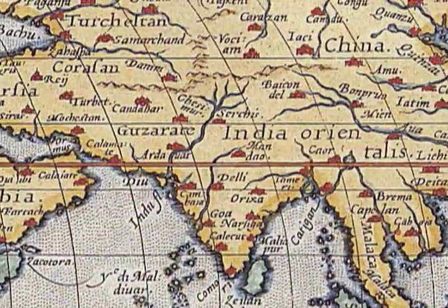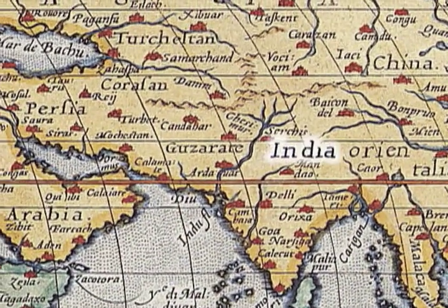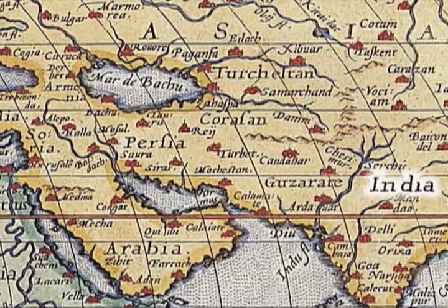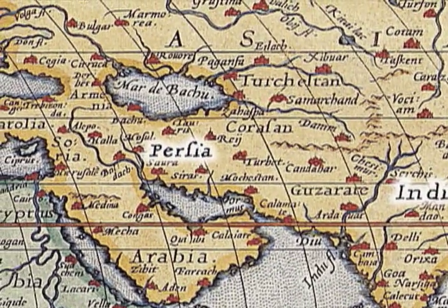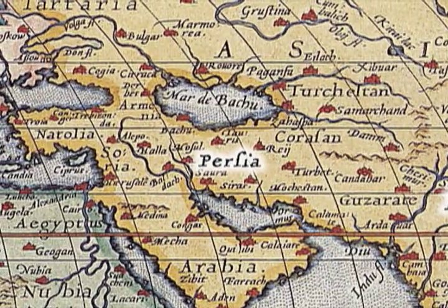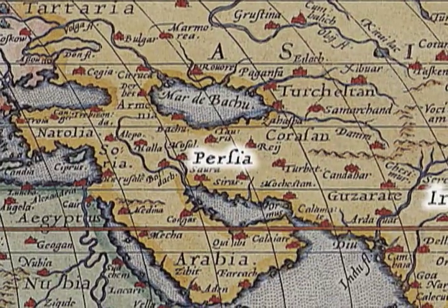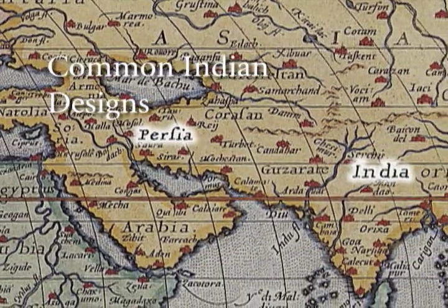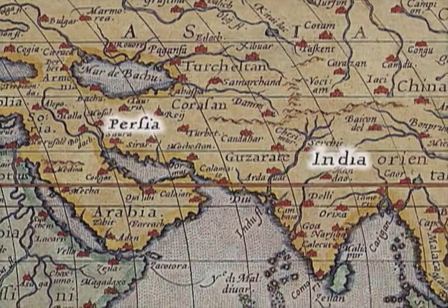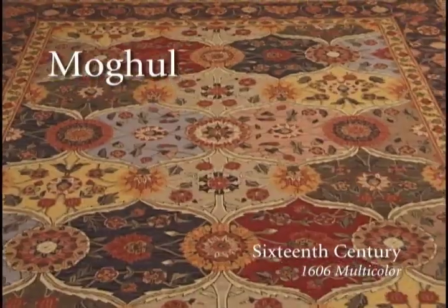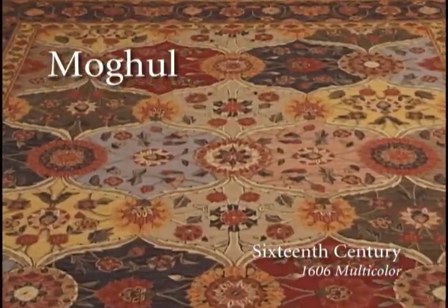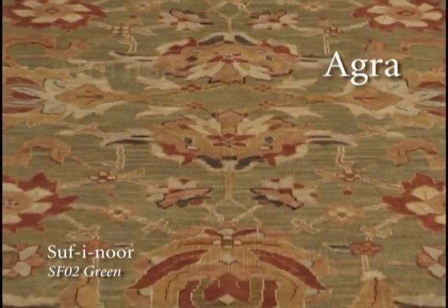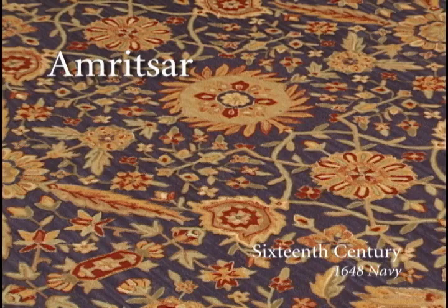There are other popular traditional designs that evolved in India. The continuing contact between India and Persia meant that design influences between the two regions were in fact mutual. Within the larger design family, three of the more typically Indian motifs are Mogul, Agra, and Amritsar.